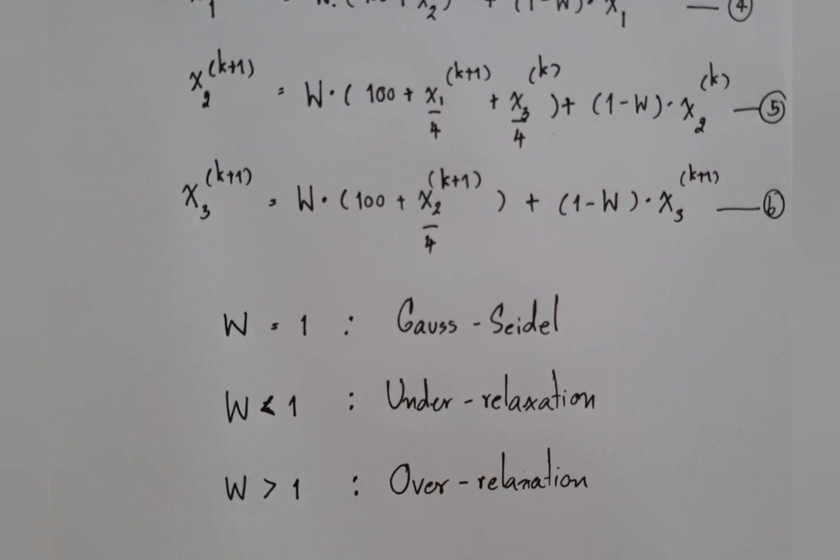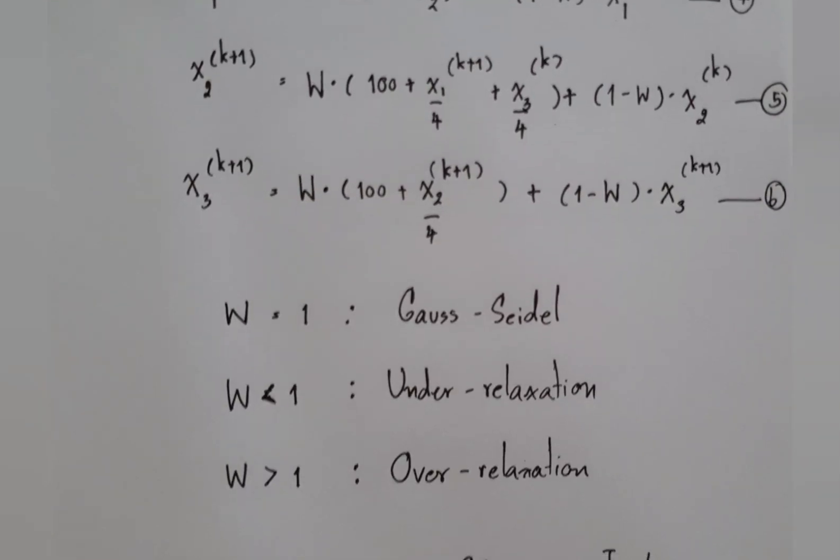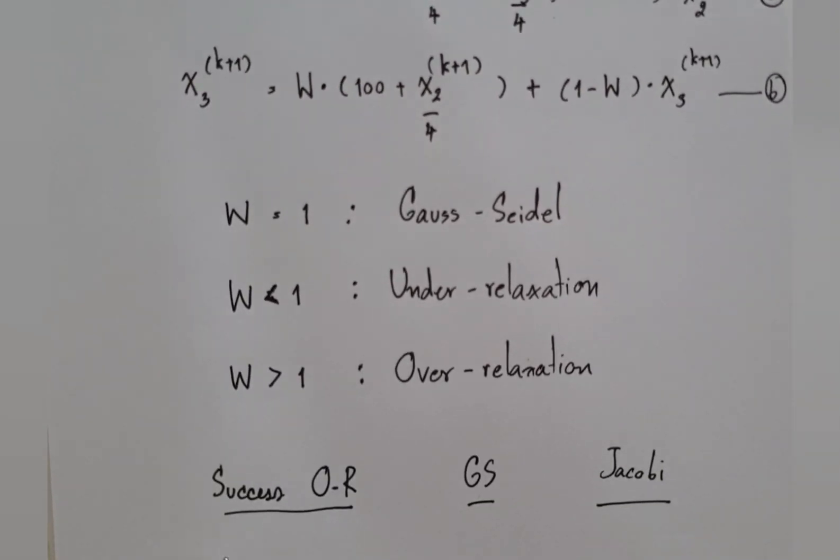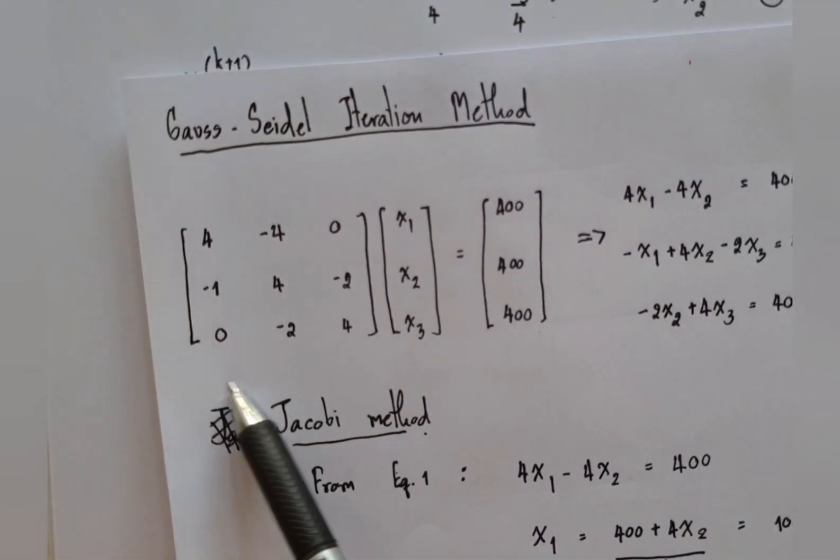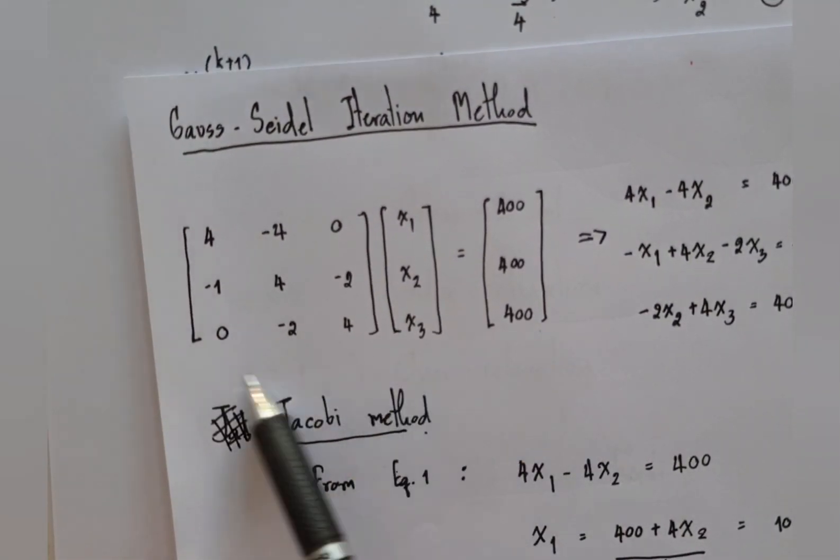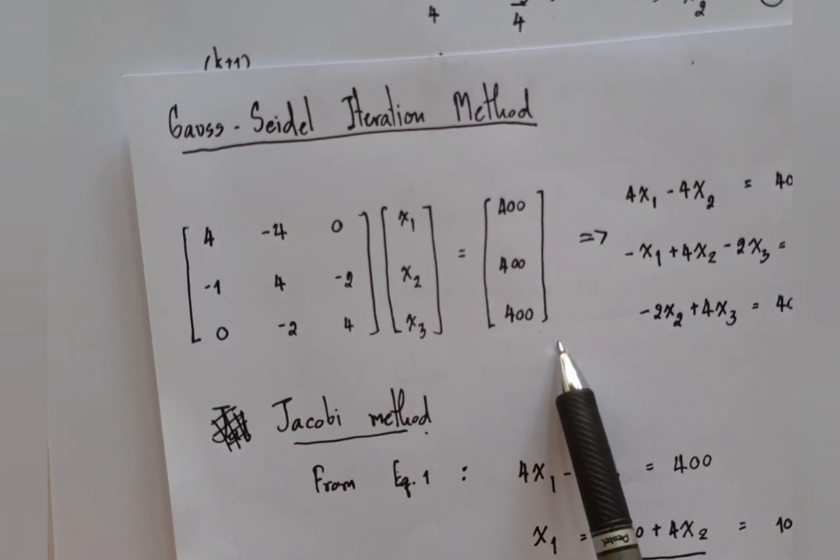So my assignment for the students: please compare the number of iterations of these three techniques - Gauss-Seidel, successive over-relaxation, Jacobi method - with the problem that we use in this lecture.